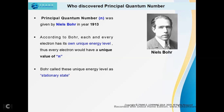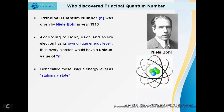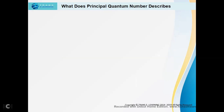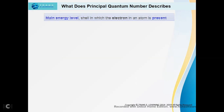Bohr called these unique energy levels as stationary states because as long as an electron is present in a particular orbit, it will neither lose energy nor gain energy.